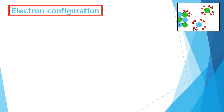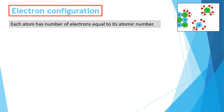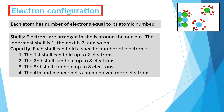Before I can draw a Lewis dot diagram, I need to know the electron configuration for the atoms I'm using, so I can calculate the number of valence electrons — the electrons in the outside shell. To work out the electron configuration, the first thing I have to do is find the atomic number of an atom in the periodic table. The atomic number equals the number of electrons in a neutral atom.